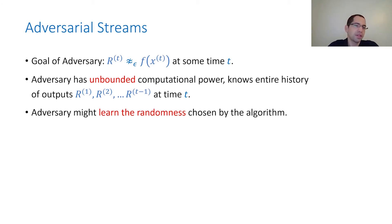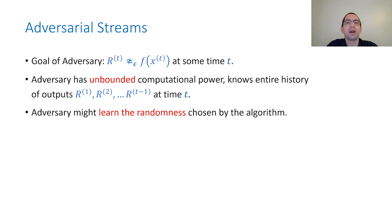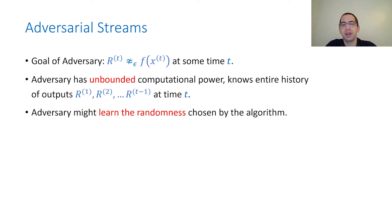The problem is that the adversary might learn the randomness chosen by our algorithm. Many streaming algorithms use hash functions; if an adversary learns the randomness of the hash function and exploits it, we have a problem. We would like algorithms where learning the randomness is either not possible or cannot be exploited to make the computation incorrect.